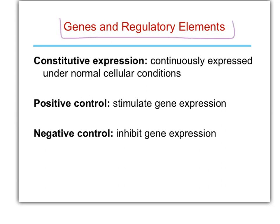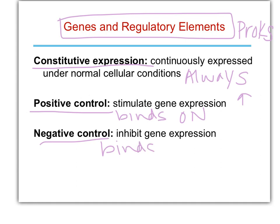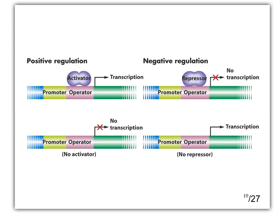A quick lecture capture on prokaryotic generic regulation. Constitutive means always on. In positive control, something binds a DNA binding protein and turns genes on. In negative control, when something binds, it turns that gene off. Here are some pictures to illustrate — positive regulation on one side, negative regulation on the other.